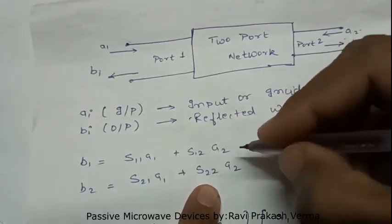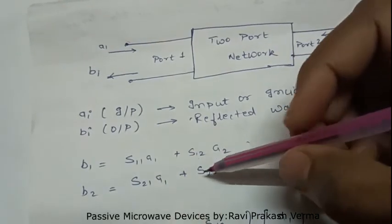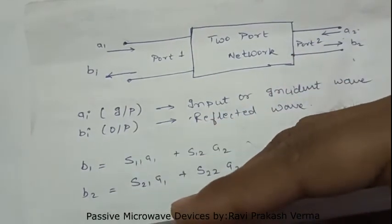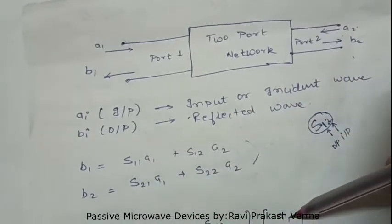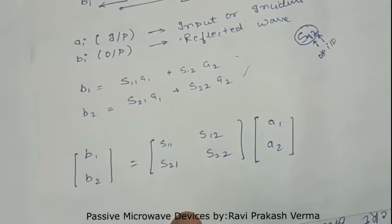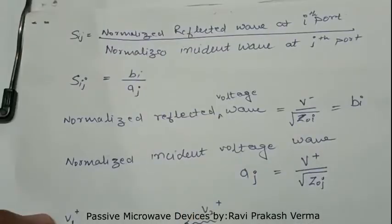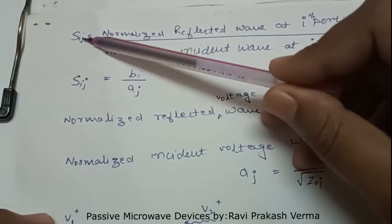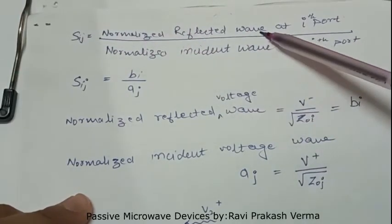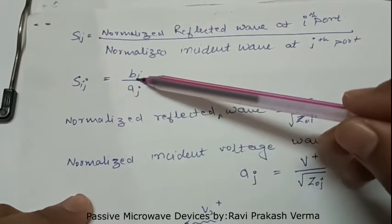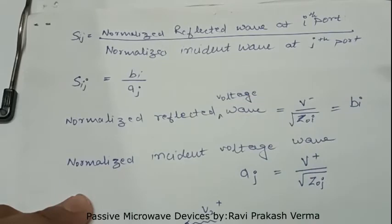These two equations from the two-port network can be written in matrix form: b1 and b2 are the reflected waves at port 1 and port 2, and this is the scattering matrix, while a1 and a2 are the incident waves at port 1 and port 2. This is the general matrix form — the S-matrix or scattering parameter. In general, the scattering parameter Sij has subscript i for the output and j for the input, and is represented as the normalized reflected wave at port i divided by the normalized incident wave at port j.